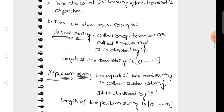Text String is a collection of characters. For example, 'Welcome to data structure' — this is one statement that is an example of a text string.